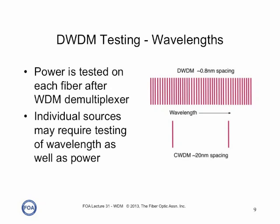Testing the power in a DWDM or CWDM system isn't all that difficult. After the wavelengths have been demultiplexed into each individual wavelength channel, any standard power meter can measure the power. But the individual sources may require testing for wavelength, as the wavelength is critical for making sure that the system operates properly. If the wavelength changes, the demultiplexing and multiplexing of the wavelength may not work properly.